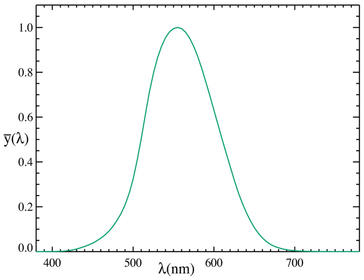Luminous efficacy of radiation is a property of the radiation emitted by a source. Luminous efficacy of a source is a property of the source as a whole.